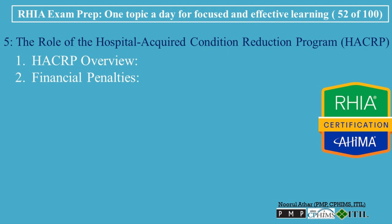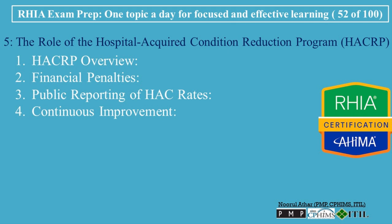Financial Penalties: Hospitals that rank in the bottom 25% for HAC performance are subject to financial penalties, including a reduction in Medicare reimbursements. These penalties are designed to incentivize hospitals to implement best practices and improve patient outcomes. Public Reporting of HAC Rates: The HACRP promotes transparency by making hospital performance data publicly available through the CMS Hospital Compare website, motivating hospitals to improve their safety practices. Hospitals are also encouraged to continuously monitor performance through quality improvement initiatives, root-cause analyses, and regular reviews of safety protocols.